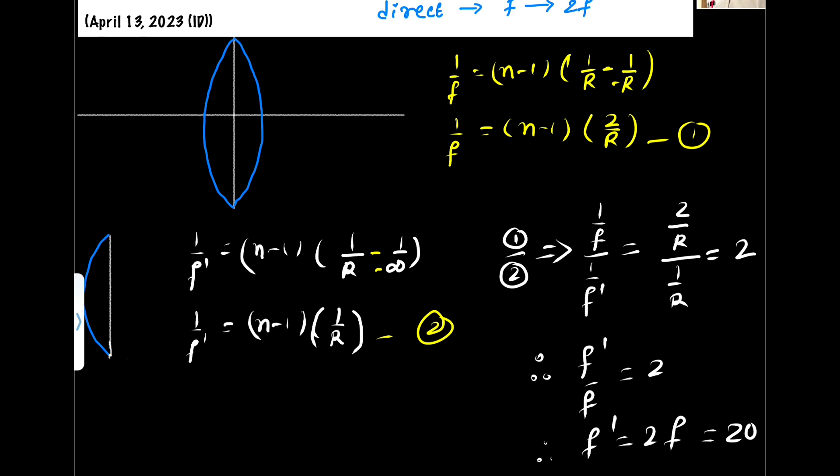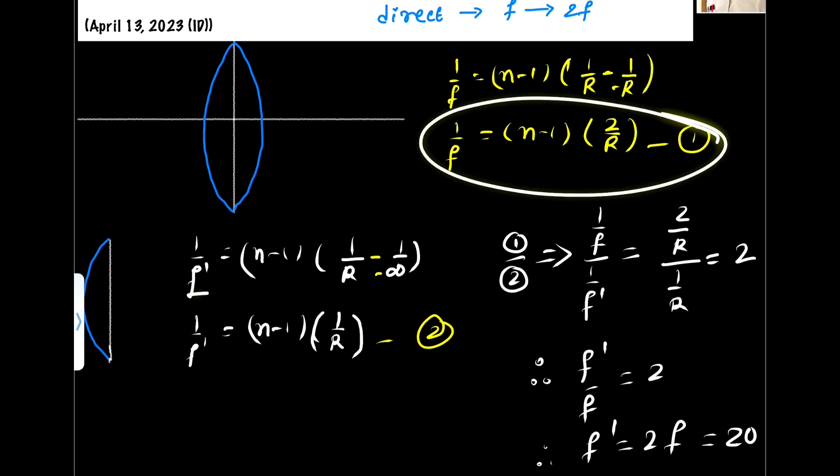Now we want power. First what we will do, let us find the focal length. So for the focal length, if we take the ratio of this equation 1 and this equation 2, then what will happen? n minus 1, n minus 1 will get cancel, so it is 2 by r...